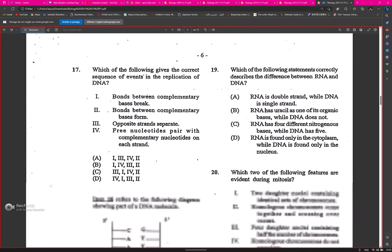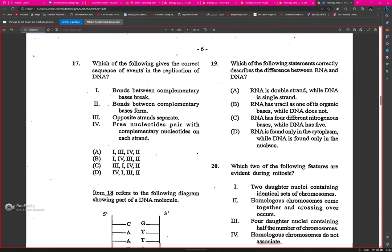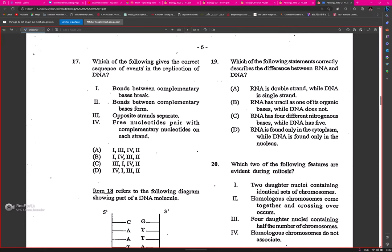Question seventeen: which of the following gives the correct sequence of events in the replication of DNA? The bonds between the strands break, opposite strands separate, then nucleotides pair with complementary bases on each strand.